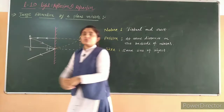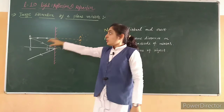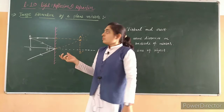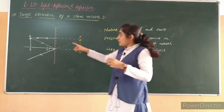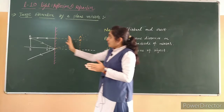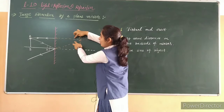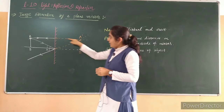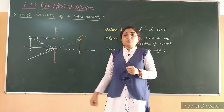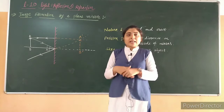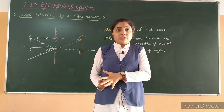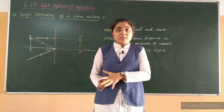Consider these two rays. Two rays originate from point A, and after reflection by the plane mirror, they are going in diverging directions. Diverging rays will never actually meet, which means the image of point A will not form on this side. But if we extend these rays behind the mirror — shown with dotted lines, as they are not actual rays — it looks like they appear to be meeting at a point behind the mirror.